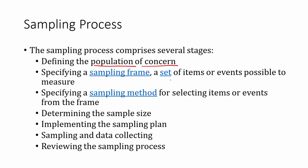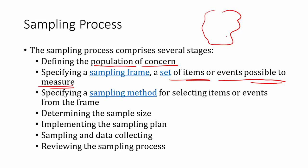From there you specify the sampling frame — the set of items or events possible to measure. Not all items are easy to measure, so that must be specified. For example, in a population not all elements are accessible, so the sampling frame is about identifying those items or events which can be measured. Then you specify a sampling method for selecting those items which are accessible and meet your criteria.